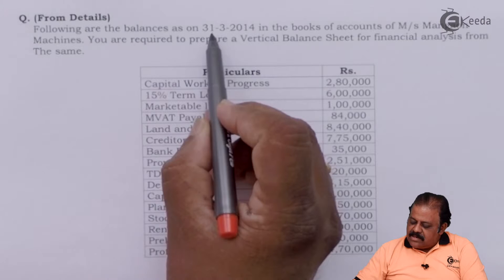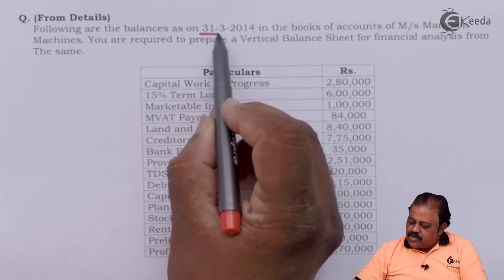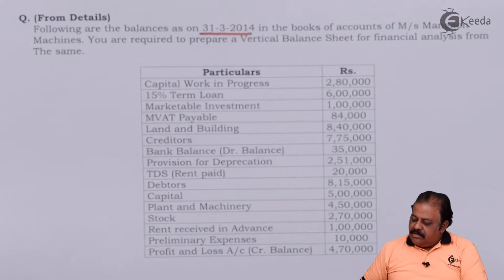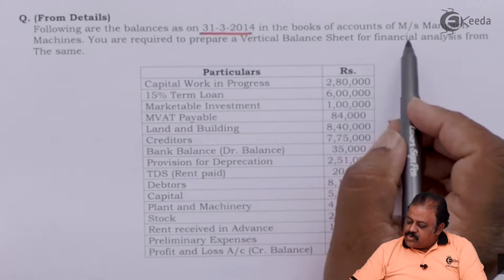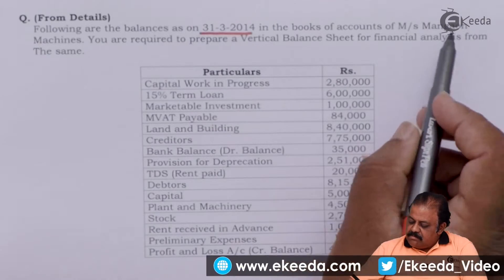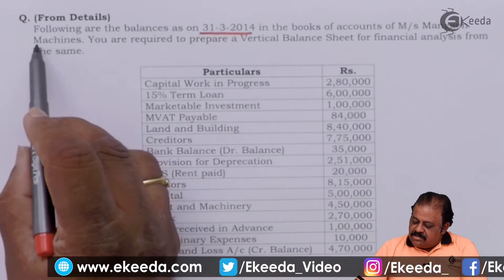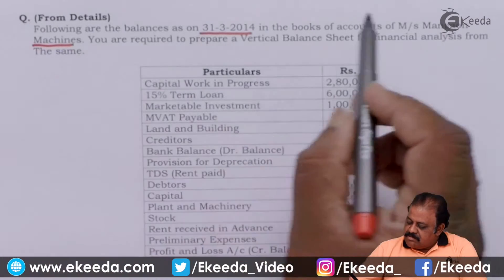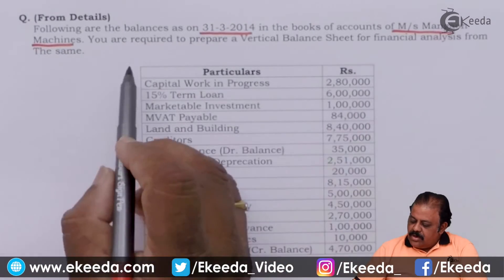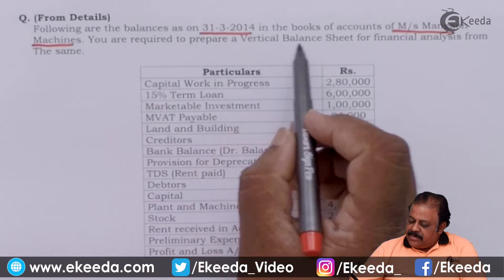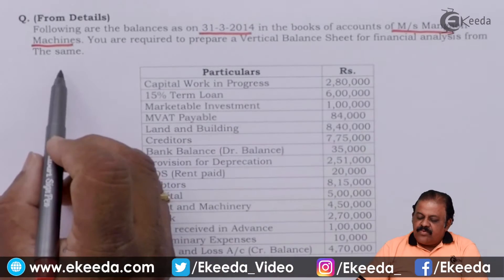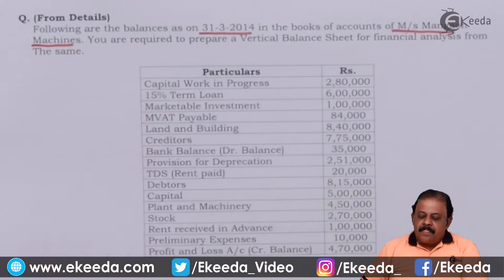Following are the balances as on 31st March 2014 in the books of accounts of Messer's Mangow Machines. You are required to prepare a vertical balance sheet for financial analysis from the same.